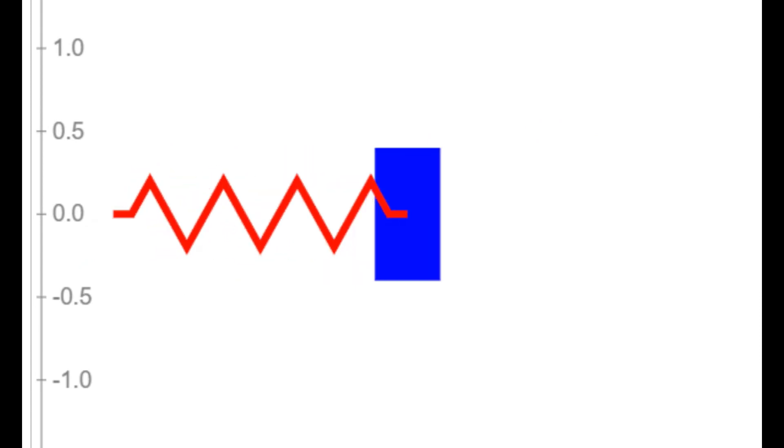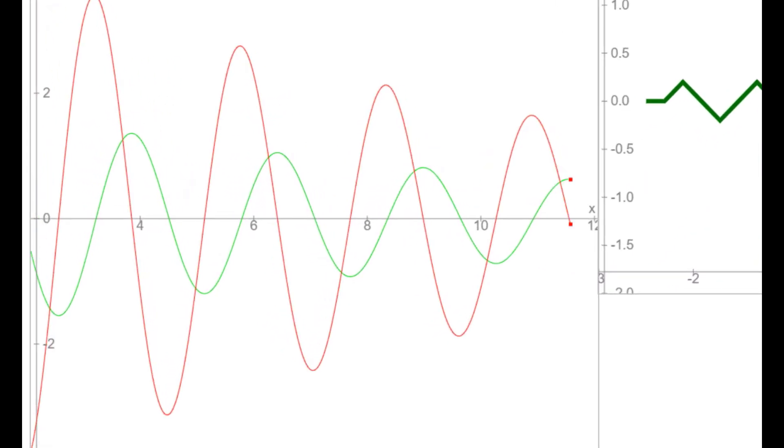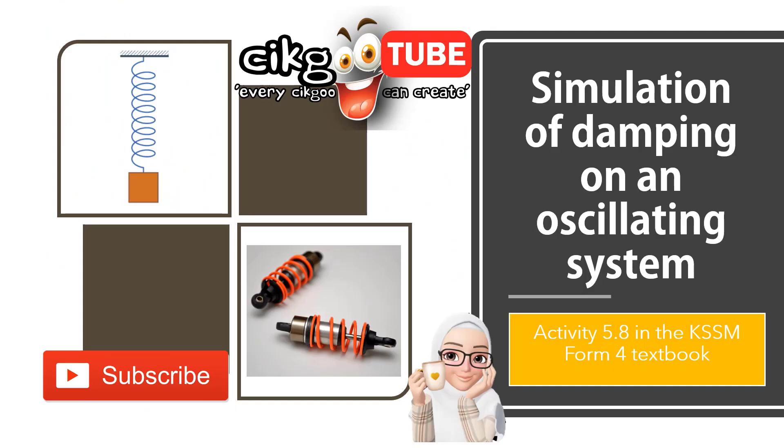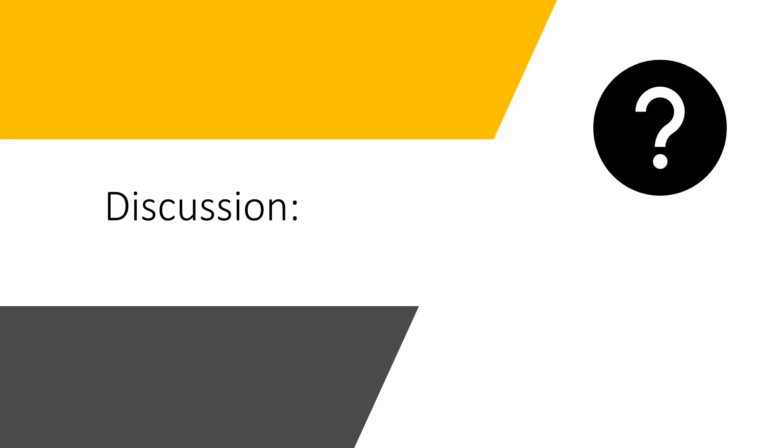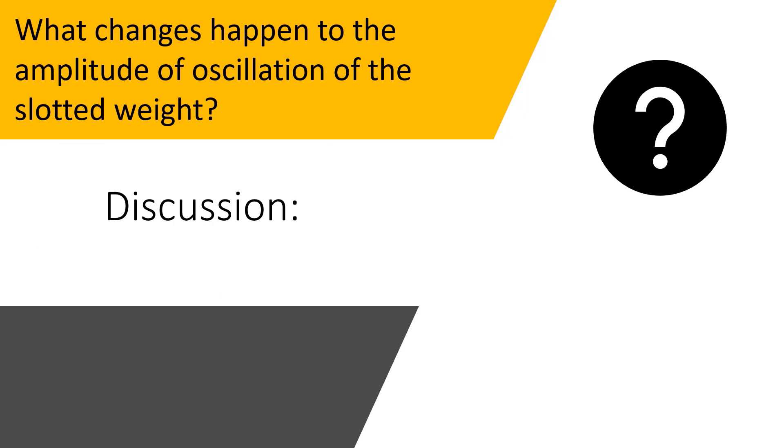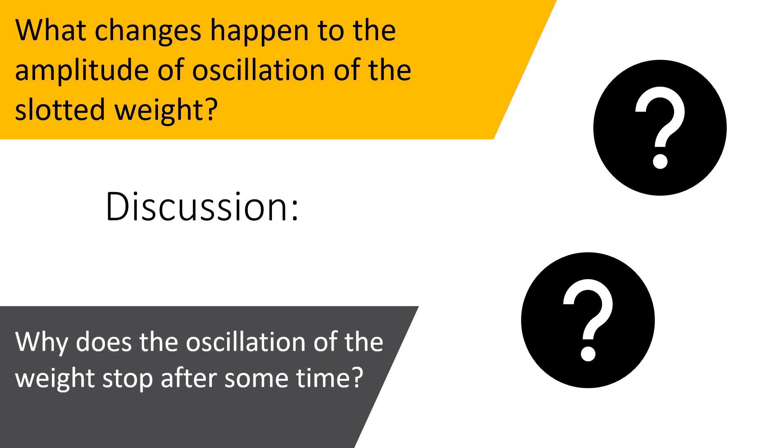To watch this simulation video, go to the link below and answer the questions that follow. Remember, you will have a quiz after this. Answer question number 1: What changes happen to the amplitude of oscillation of the slotted weight? And question number 2: Why does the oscillation of the weight stop after some time? Think about it and answer.